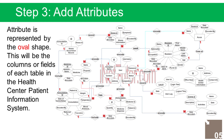Illness Information entity attributes: Illness ID (Primary Key, represented with underline), Name, Symptoms, Date Encoded, and Encoded By. Illness Occurrence Record entity attributes: ID (Primary Key, represented with underline), Illness ID (Foreign Key), and Consultation ID (Foreign Key).